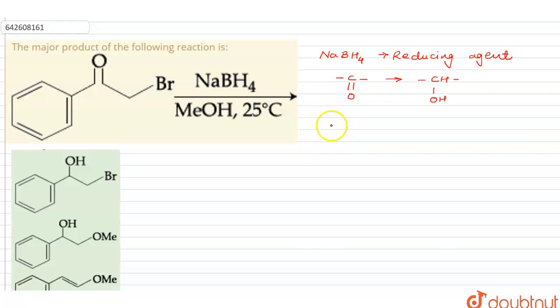Now, obviously it is due to this borohydride group which is present over here that we are able to get an alcohol. So if you can imagine this, this is the BH4 minus ion.